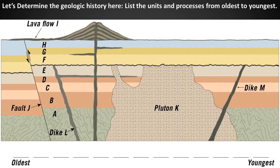Let's determine the geologic history here. List the units and processes from oldest to youngest, considering the basic principles: the principle of superposition, cross-cutting relations, the principle of original horizontality, the three types of unconformities, and the principle of lateral continuity. Write down your interpretation for geologic history based upon your knowledge of these principles as they apply to the drawing. Pause the video until you complete this exercise. Sometimes it helps to start with what you think is the youngest and the oldest, then list the order from oldest to youngest noting which principle you used.